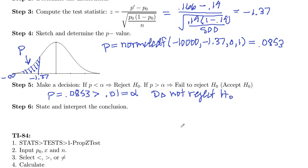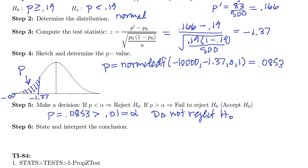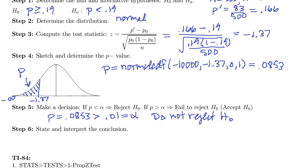And what does it mean if we do not reject it? That means we're going to accept that as true, that p is greater than or equal to 0.19. So there is not sufficient evidence to conclude p is less than 0.19.